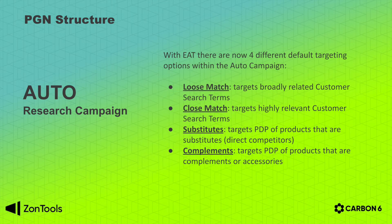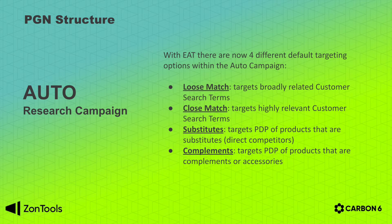The auto campaign is going to be a research campaign with the new EAT enhanced auto targeting. Auto by default will have four entities. The four different targets within the ad group will be: a loose match, which will go about matching your product to broadly related customer search term searches; a close match, which will match your product and your ad with highly relevant customer search term searches; substitutes, which will target the product detail page — specifically targeting direct competitors; and lastly, complements, which is the fourth target of the auto campaign, which will show your ads on product detail pages of products that are complements or accessories of yours.